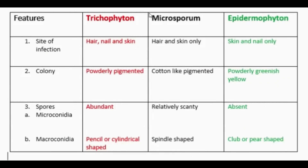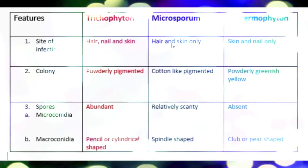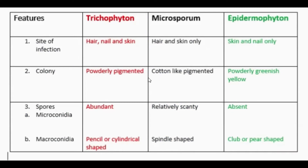Similarly, about Microsporum: it affects hair and skin only. The colony is cotton-like and pigmented. Microconidia are relatively scanty, and macroconidia are spindle shaped.